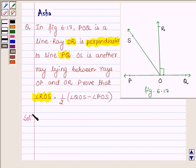So let us begin with the solution. We are given that ray OR is perpendicular to line PQ. This implies angle POR is equal to angle ROQ, which is equal to 90 degrees.